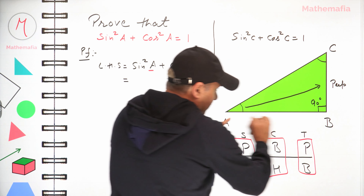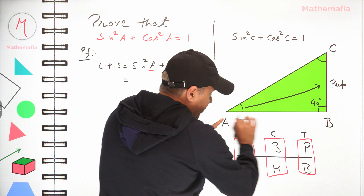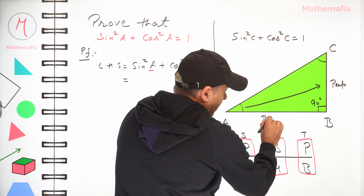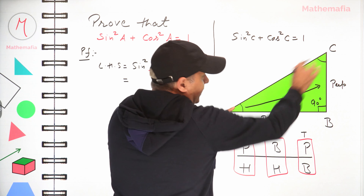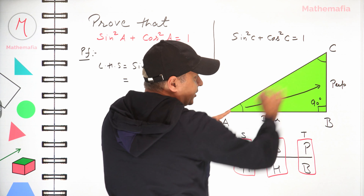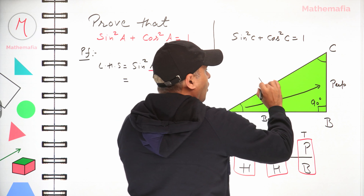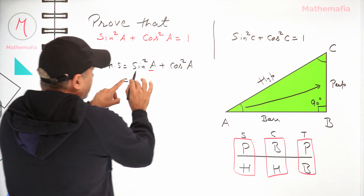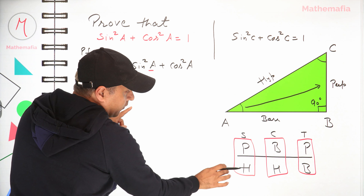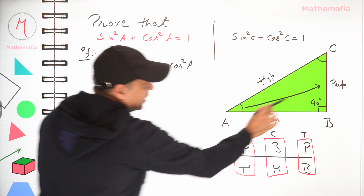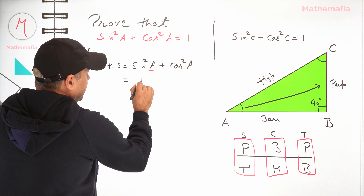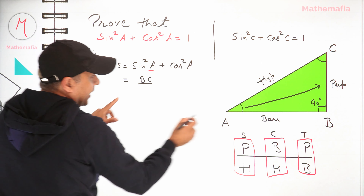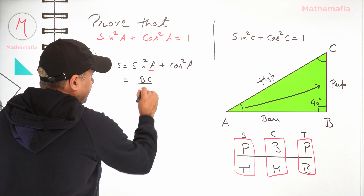The side adjacent to angle A will be the base, and the largest side is always the hypotenuse. So sin a will be perpendicular over hypotenuse, which is BC divided by AC.